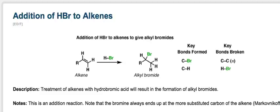The basic pattern of this reaction: we're starting with an alkene, a carbon-carbon pi bond. The carbon is attached to R, which is some generic carbon group. We're adding HBr, hydrobromic acid, a really strong acid, and our product is an alkyl bromide. The key bonds formed are carbon-bromine and carbon-hydrogen. The key bonds broken are the carbon-carbon pi bond and the hydrogen-bromine bond.